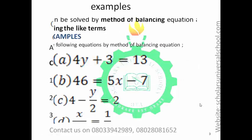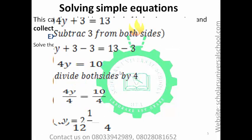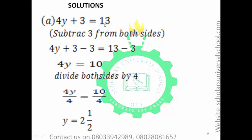Example 1: 4y plus 3 is equal to 13. This y is standing for a particular number which we do not know — and that is what we are looking for. We need to take away the 3 from this side and reduce the equation to y alone. So let's take 3 as what we need to remove. We add minus 3 to both sides, so that plus 3 minus 3 gives us zero.